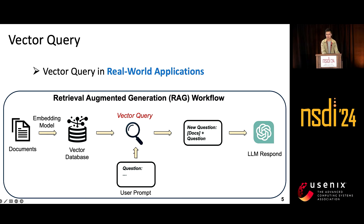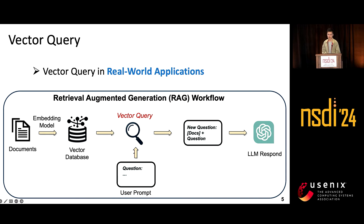The animation shows the workflow of RAG. RAG converts personal and organizational documents into high-dimensional vectors and constructs a vector database. When a user posts a question, it first issues a vector query to identify a set of documents that may contain an answer. These documents, along with the original question, are then fed into an LLM. The LLM then analyzes the text information and returns the final result. As the scale of the database grows to billions and trillions, vector query becomes the key bottleneck in this workflow.